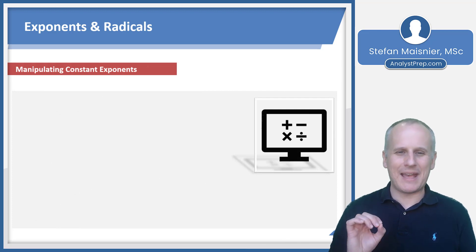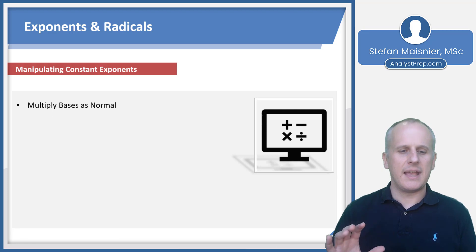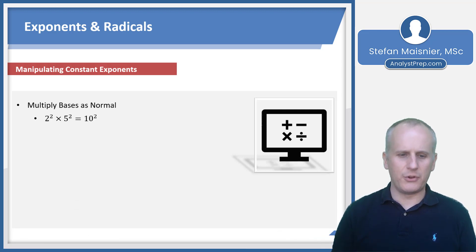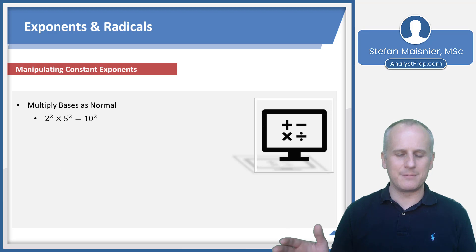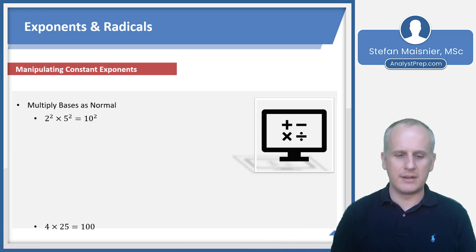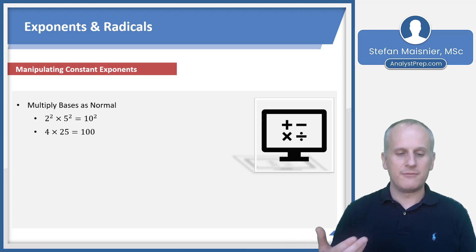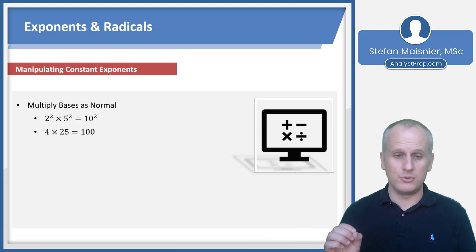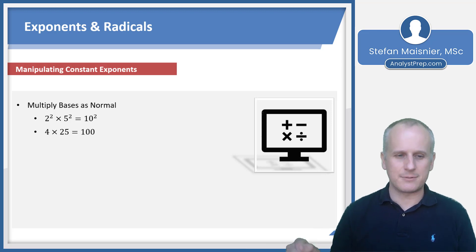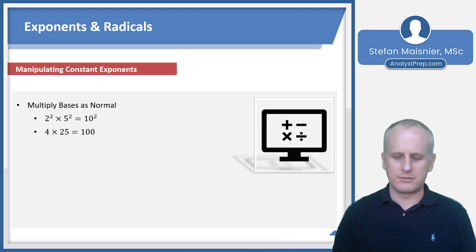If you have the same exponent, you can also manipulate your expressions. With the same exponent, you can multiply the bases as normal. So two squared times five squared is just ten squared — you keep the constant exponent and combine the bases. Two squared is 4, five squared is 25, and 4 times 25 is 100, which is of course ten squared. You can maintain exponential notation when exponents are constant by simply multiplying the bases.